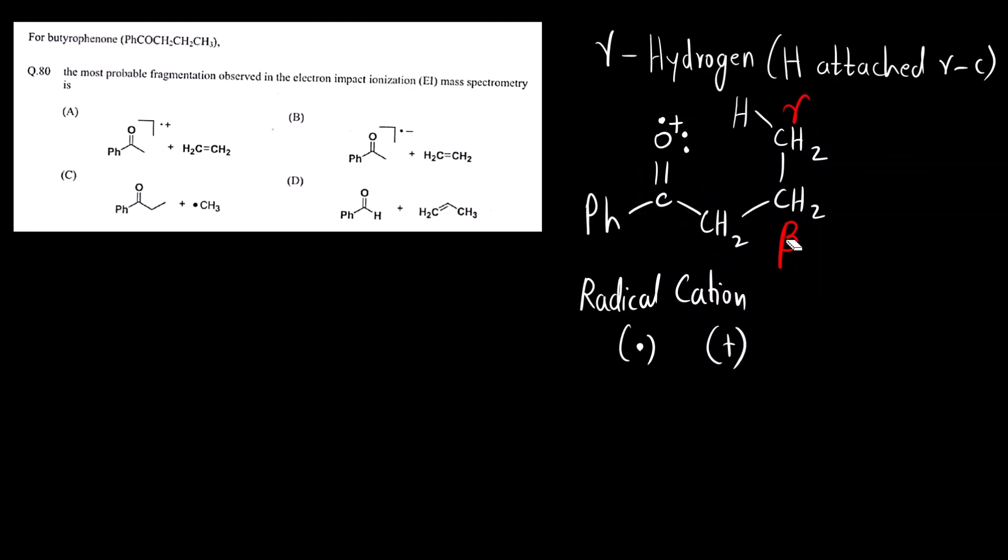Now what will happen is we can, we had seen two mechanisms. One is what I can do: I can do ionic mechanism like this, movement of two electrons. Which bond is broken? Bond breaking between alpha and beta is broken like this. So what we get is Ph-C double bond, double bond now becomes single bond OH, double bond CH2, single electron and positive charge, plus ethylene molecule is lost.